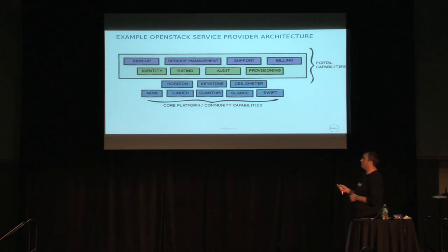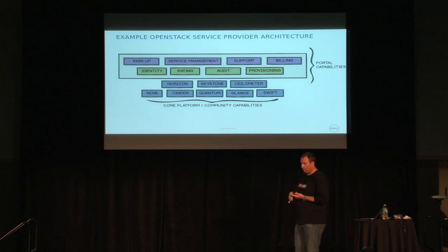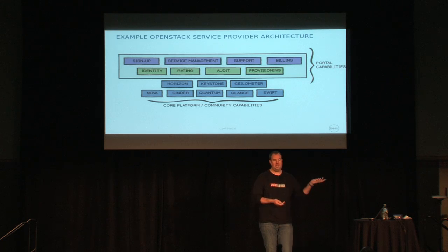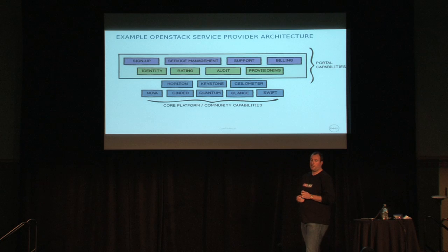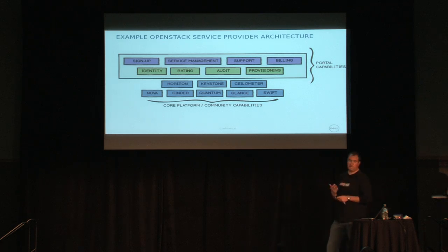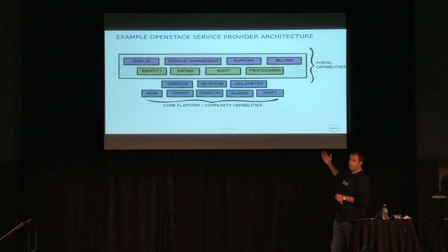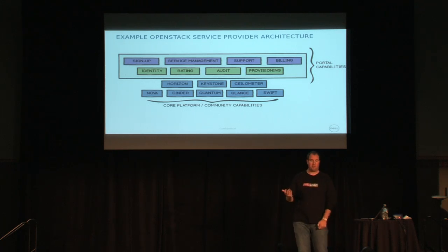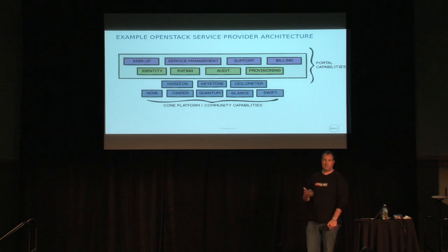I say identity here because you have Keystone for OpenStack identity. But if you're a service provider, you might already have your own view of what identity is — Amazon has an Amazon account, at Dell we have 'My Account'. You might have an existing identity provider which is going to drive some of what you do with Keystone. And a rating engine — Ceilometer provides meters but it doesn't rate. A rating engine takes the meters and turns them into something tangible you can charge for.